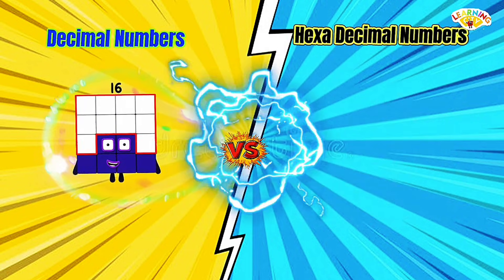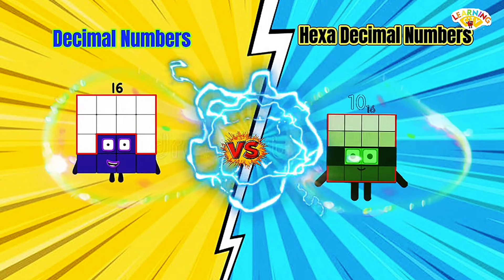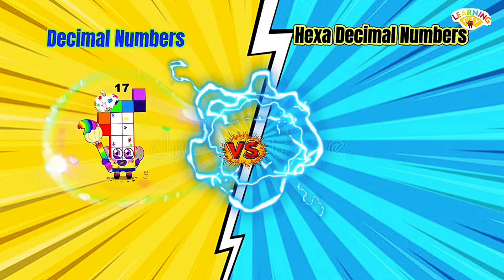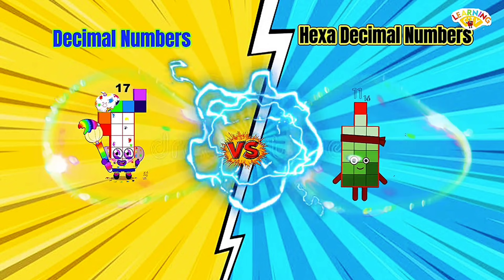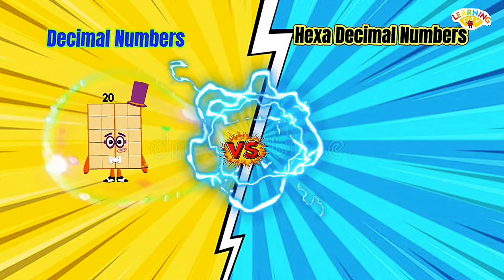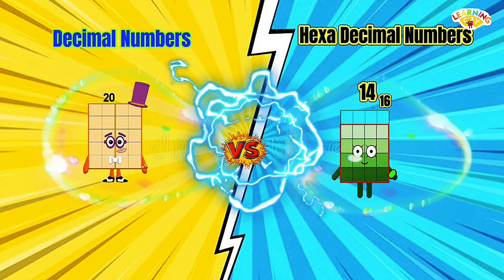Decimal 16 equals hexadecimal 10. Decimal 17 equals hexadecimal 11. Decimal 20 equals hexadecimal 14.